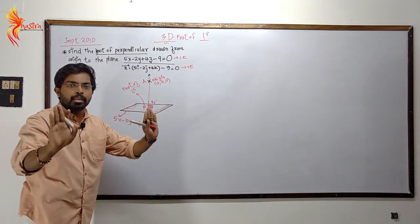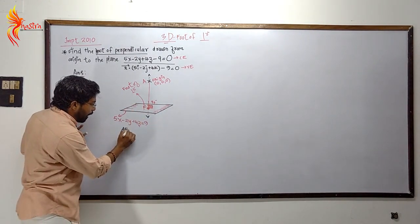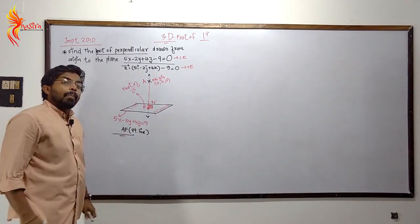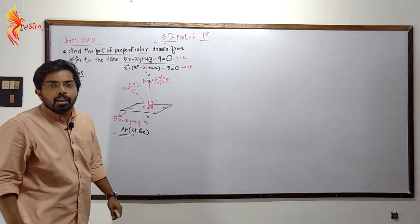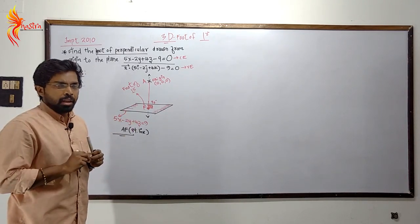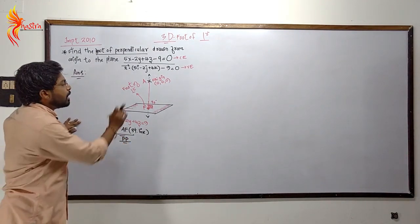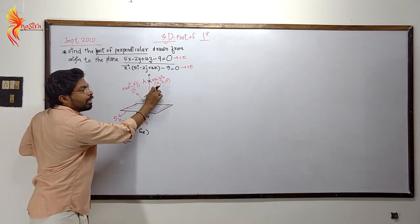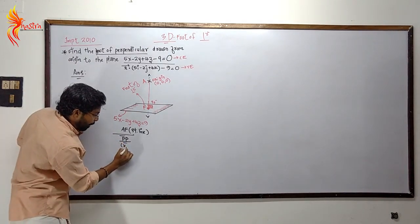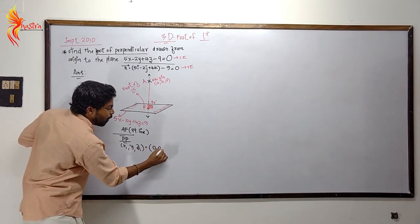To write the Cartesian equation of the straight line AF, we have a passing point. The passing point is (0, 0, 0), which is the origin. The foot of perpendicular is F with coordinates (x, y, z).